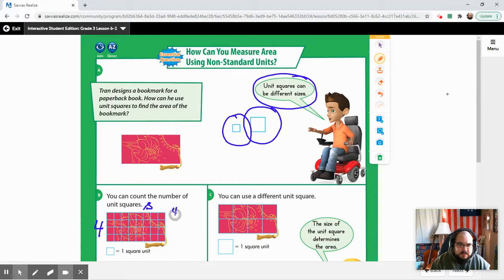So really, we're looking at an equation. It's 4 times 8. Of course, you can count all of those, but you don't have to. So in this case, we have 32 square units.